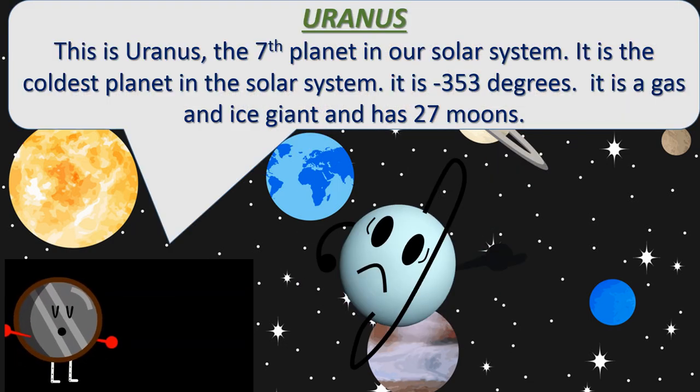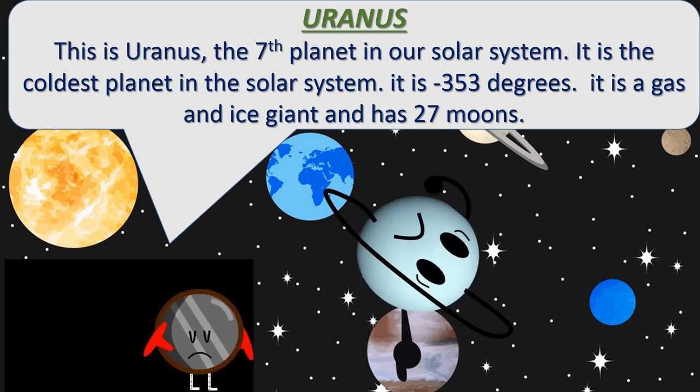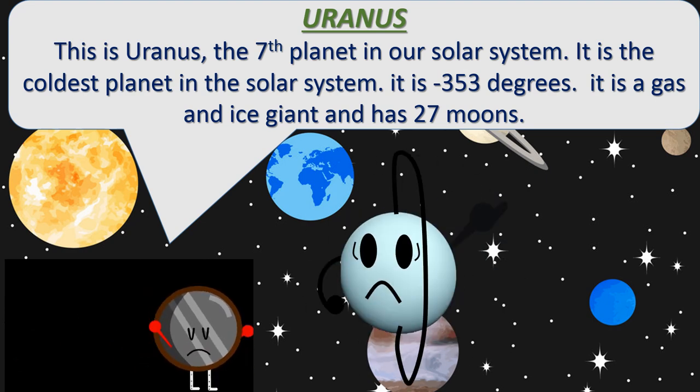Uranus. This is Uranus, the seventh planet in our solar system. It is the coldest planet in the solar system at nearly negative 353 degrees. It is a gas and ice giant and has 27 moons.